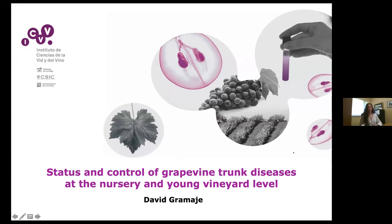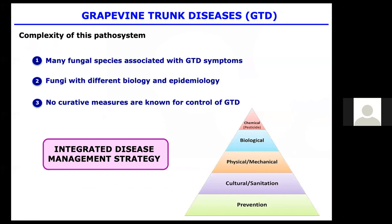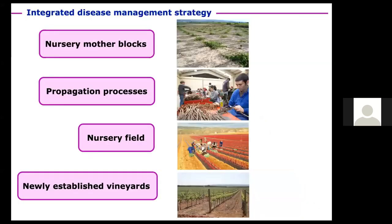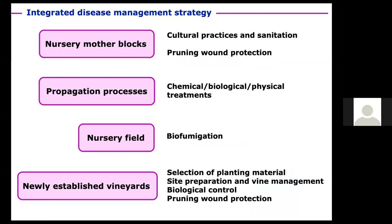As Jose mentioned, this pathosystem is really complex, with many fungal species associated with GTD symptoms. They have different biology and epidemiology, and no curative measures are known for control of GTDs. These diseases are best managed by an integrated strategy including different tools, giving priority to non-chemical methods. In this presentation, I'm going to discuss the currently available strategies to reduce GTD infections.